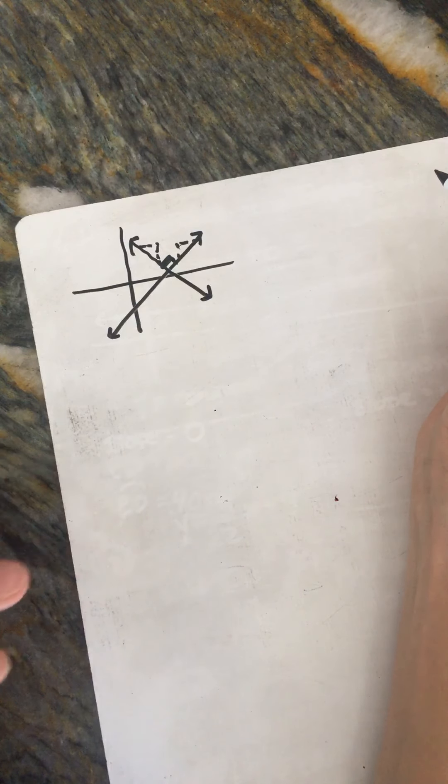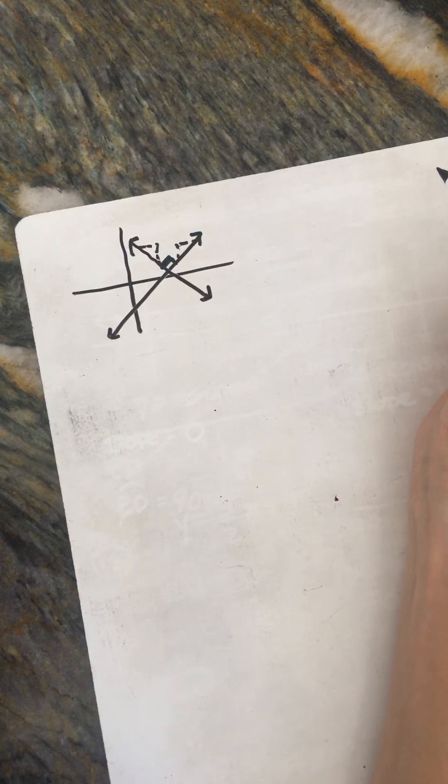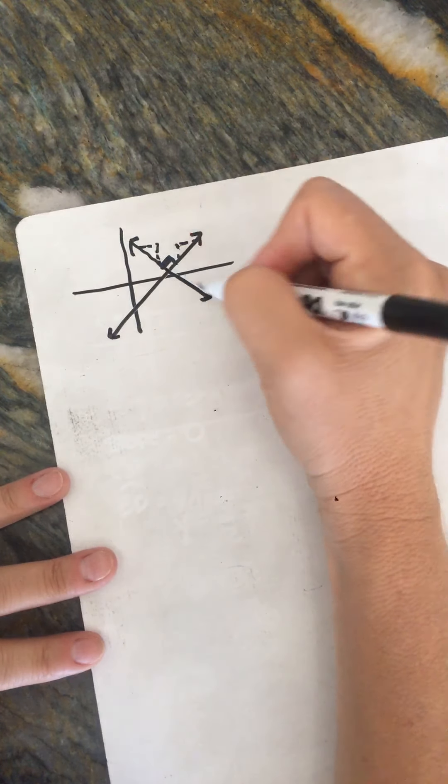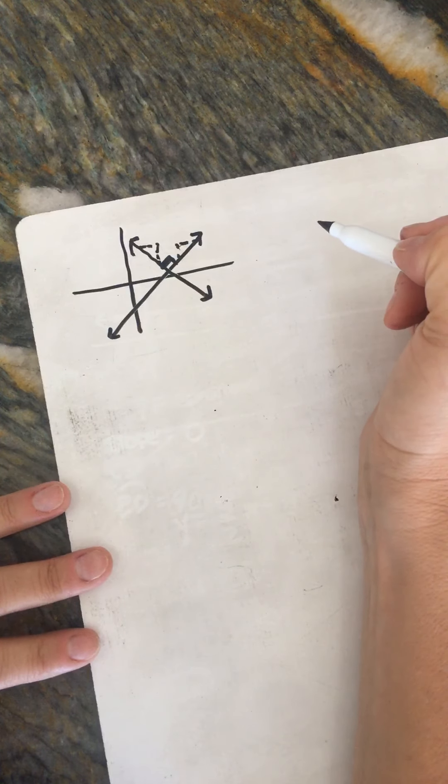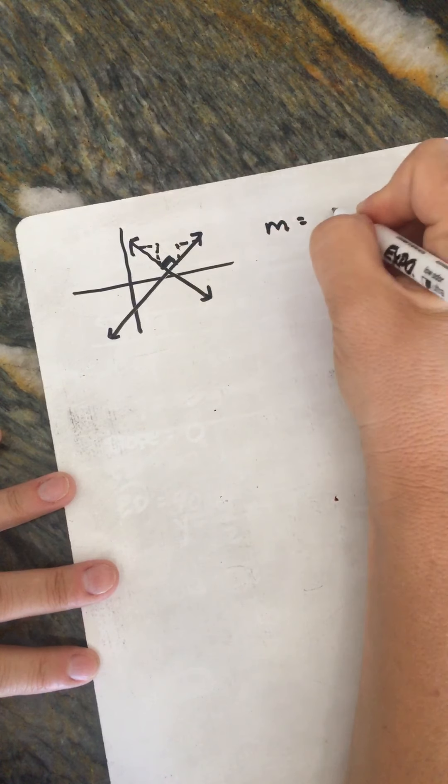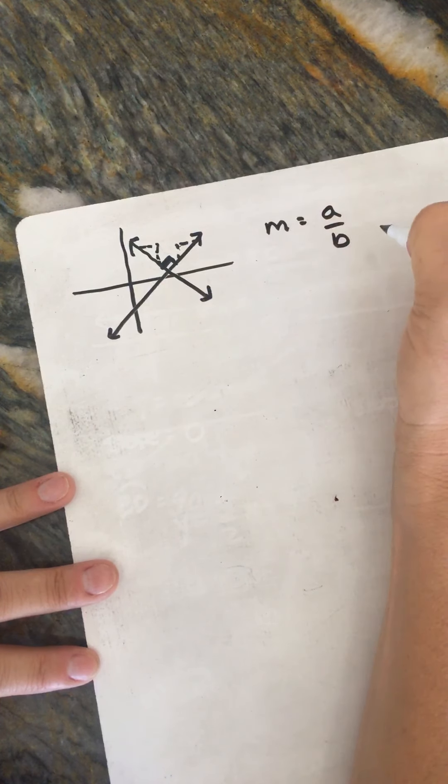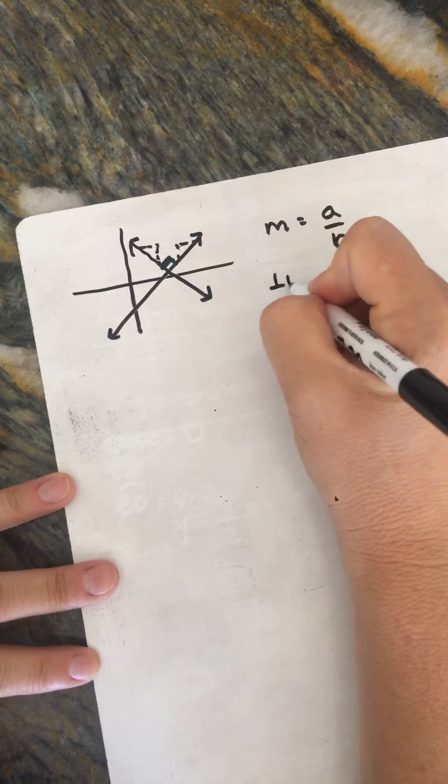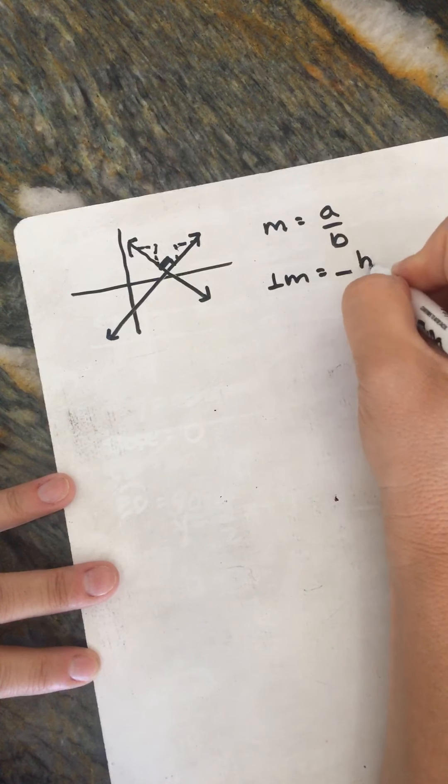They're actually reciprocals of each other, and they are going in the opposite direction. So they're opposite reciprocals. So if the slope is a/b, your perpendicular slope will be -b/a.